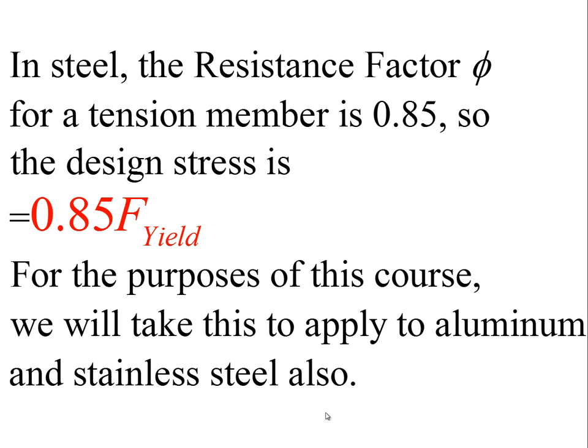In steel, the resistance factor φ for a tension member was set at 0.85 for the Manual of Steel Construction that prevailed at the time the textbook was written. In other words, the design stress to which we design is 0.85 times the yield stress of the material. This 0.85 is the so-called resistance factor, which has built into it a 15% safety factor accounting for our uncertainty in the behavior of the member.